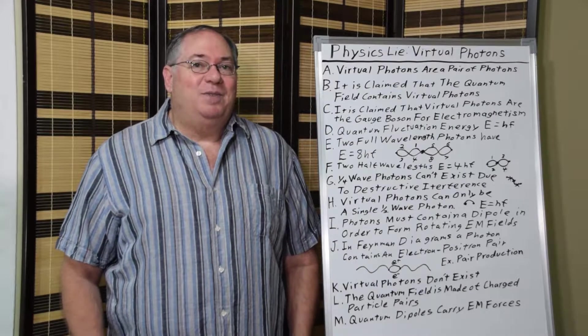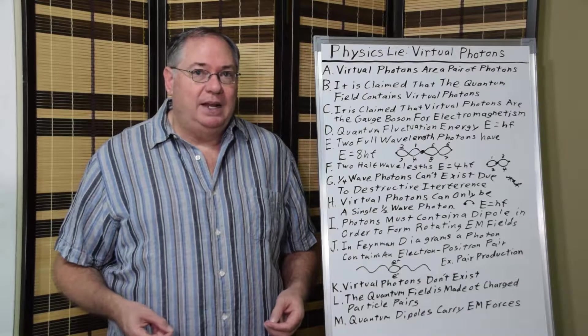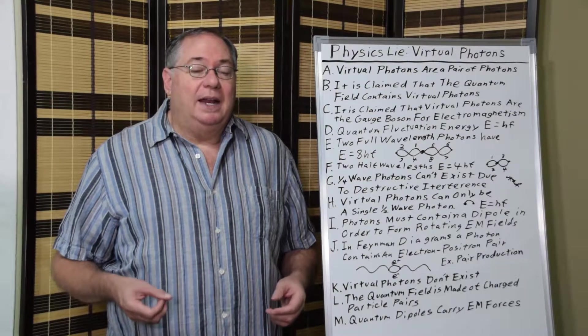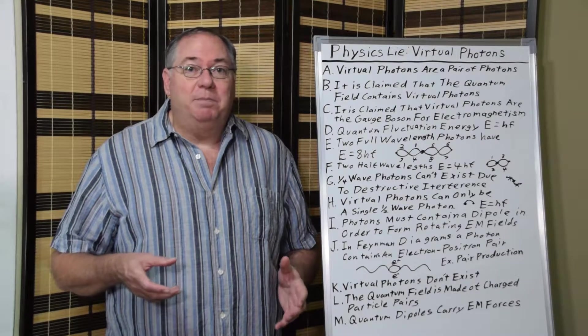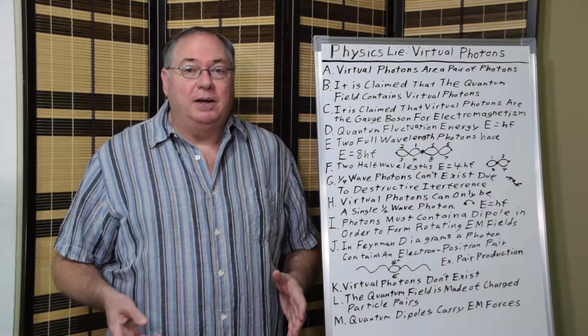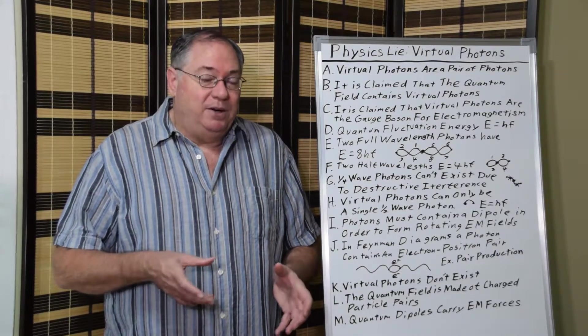Virtual photons are a type of quantum fluctuation, hypothetically, that contains two photons. These are a photon pair because photons are their own antimatter. So a matter-antimatter pair of photons is a pair of photons.